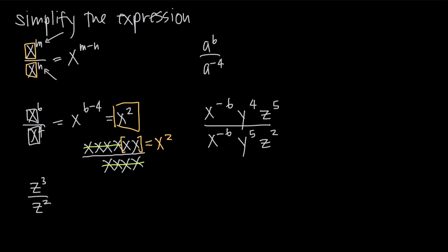So that's why that works. Looking at another example, the base doesn't matter as long as the bases match. Here we have the variable z instead of x, but the important thing is that both bases are z, so we can combine these into z to the three minus two, or z to the first power, which is the same thing as just z.